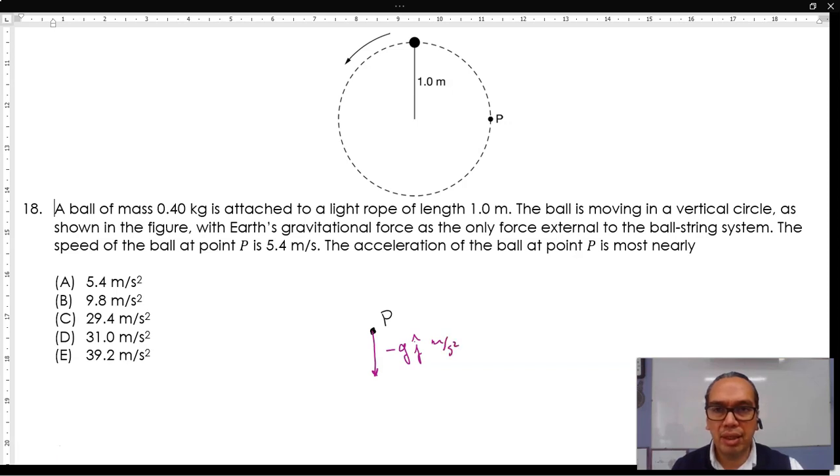And then, there is a radial component, which is going this way, and that we know to be equal to the square of the speed divided by the radius, at least in magnitude.